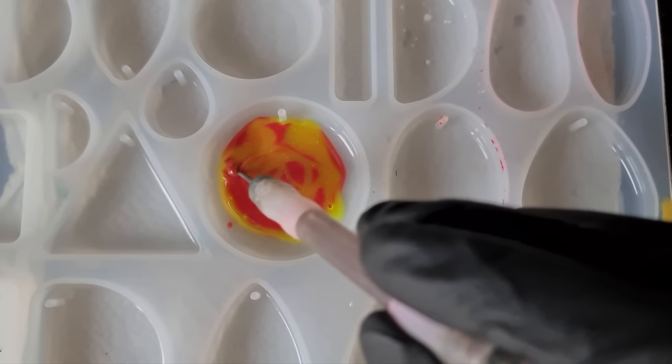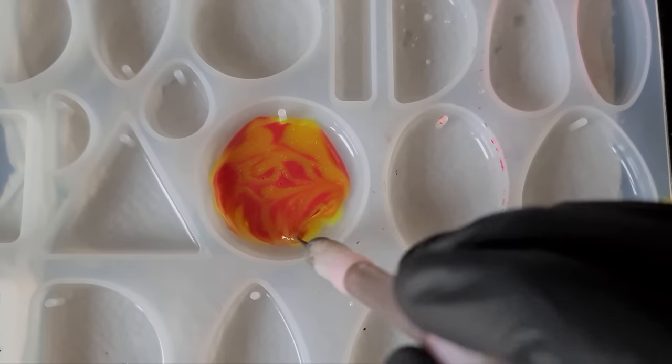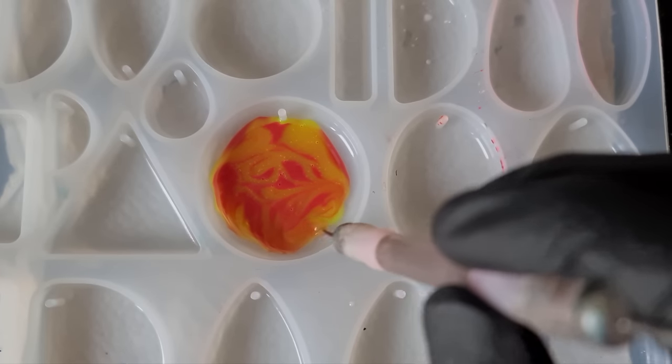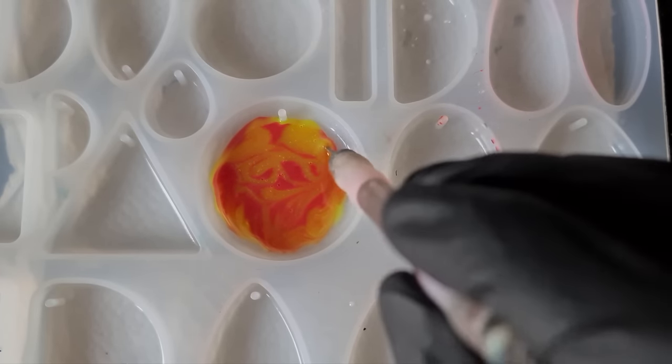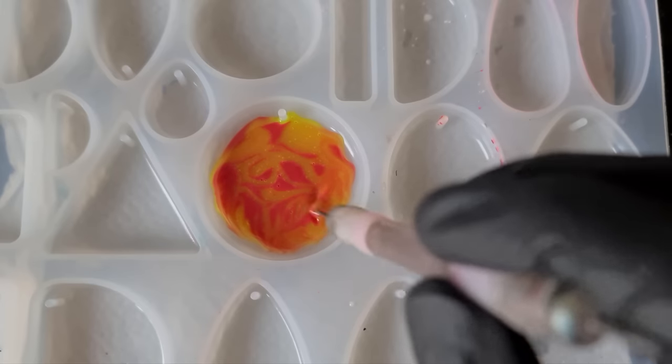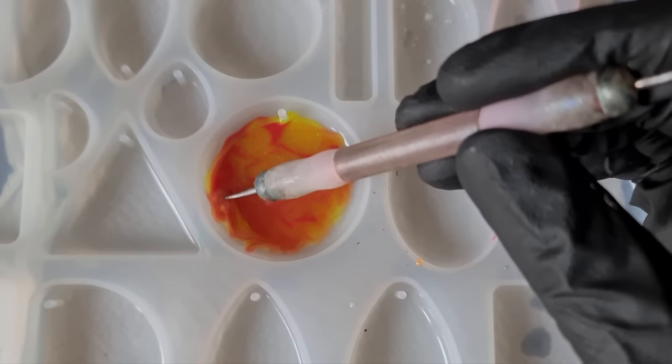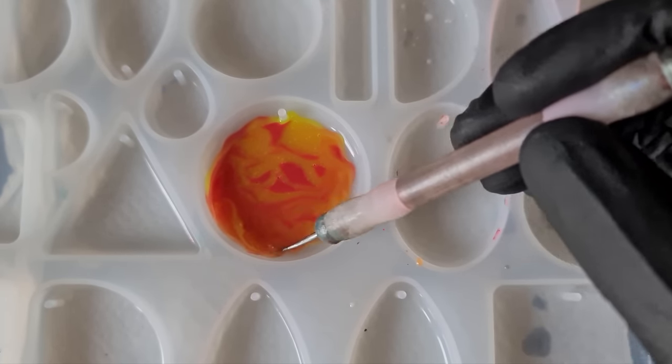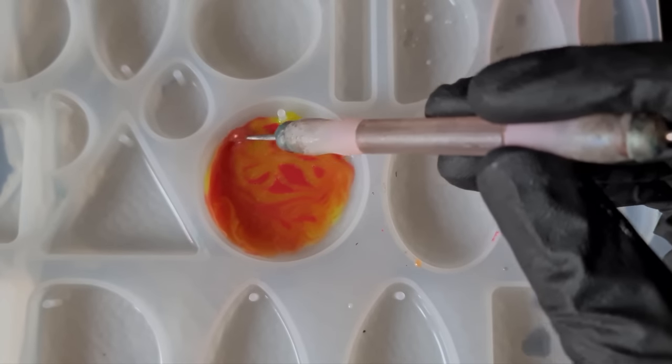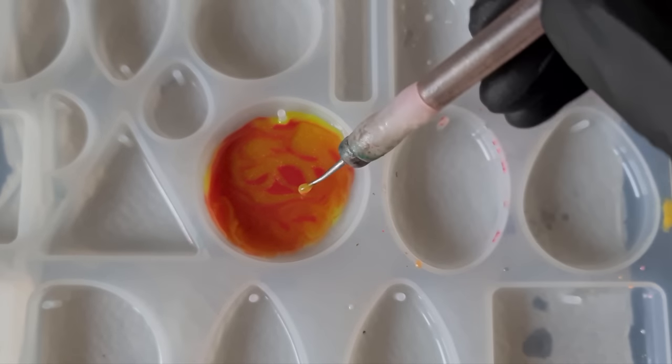Once that is in we can then just mix things up a little bit and just cover the whole surface of the mold. Try and get it quite rounded, try and drag it around to make it rounded.